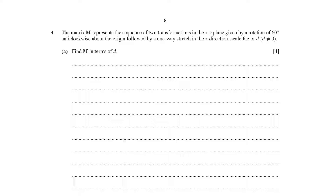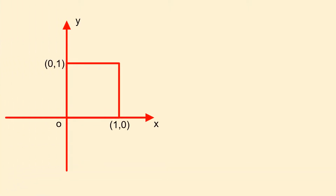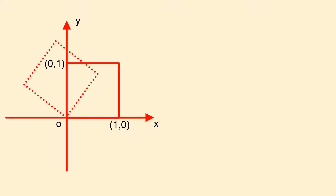We have a composite transformation. First, we have a rotation of 60 degrees anticlockwise about the origin. Here I would want you to consider a unit square on the Cartesian plane. If we rotate it by 60 degrees about the origin going anticlockwise, we will have the transformed square.